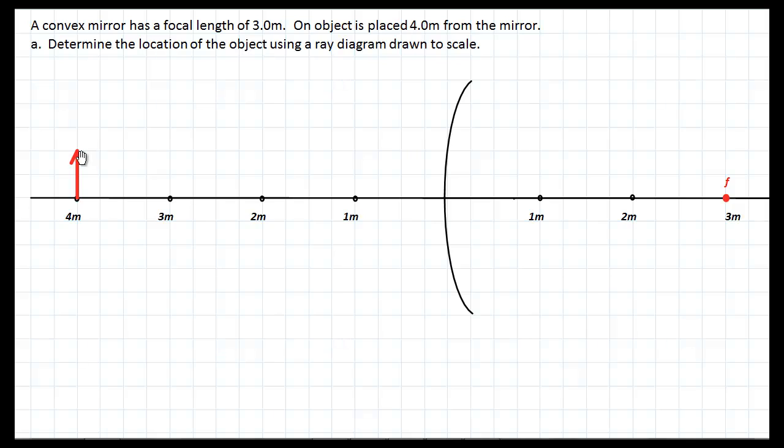My first ray is always the same. I always start with a parallel ray that strikes the mirror and ends up somehow going through the focal point. In this case it's a virtual focal point. Let's see how that looks. Okay so there's my first parallel ray.